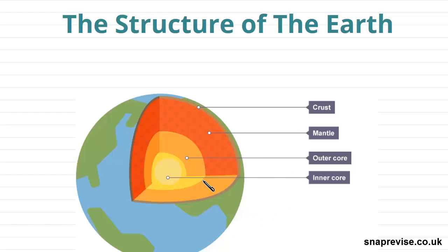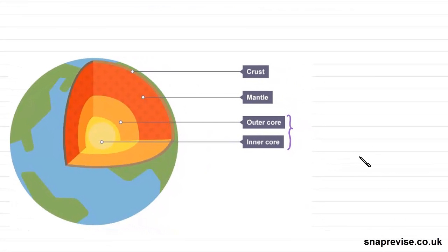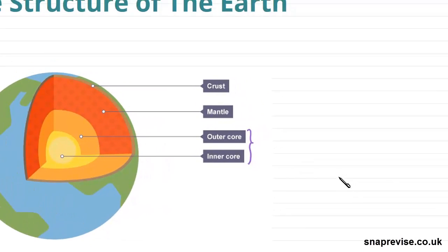So the core can actually be divided into two separate regions, which is the outer core and the inner core. And then we have our mantle, which is this big section here, and the crust. So I'm just going to go into a bit more detail about the properties of these different areas.